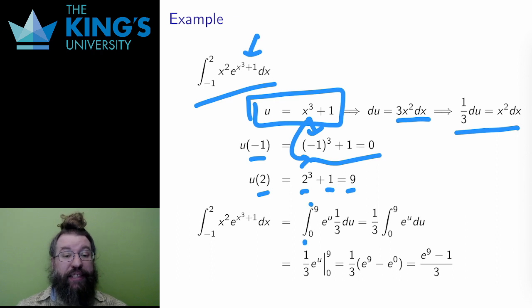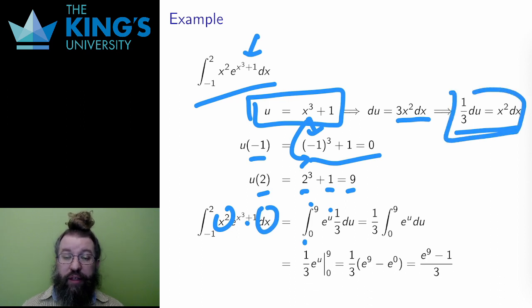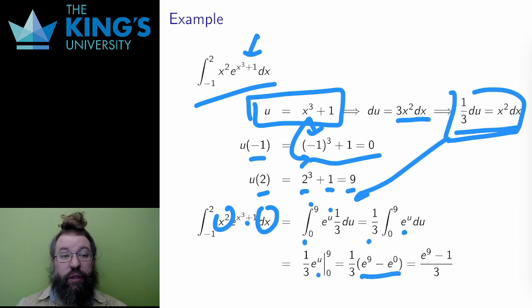Then I can change everything in the integral. The new bounds are 0 to 9, the x cubed plus 1 in the exponent becomes u, and the x squared dx together are replaced by 1 third du. Then I pull the 1 third out of the integral. The antiderivative of e to the u is still e to the u, which I evaluate on the bounds. And the result is e to the 9 minus e to the 0, which is e to the 9 minus 1, all over 3.